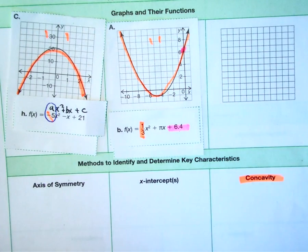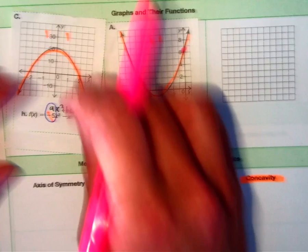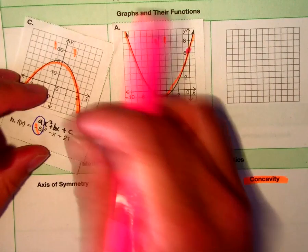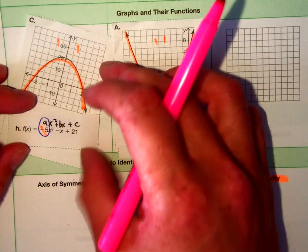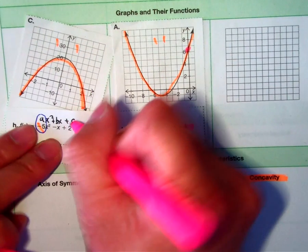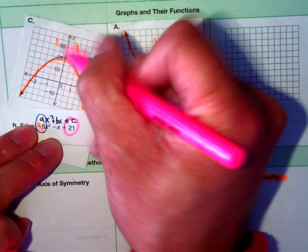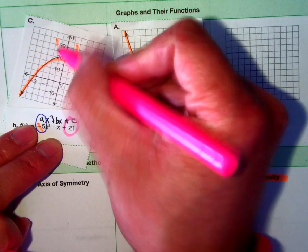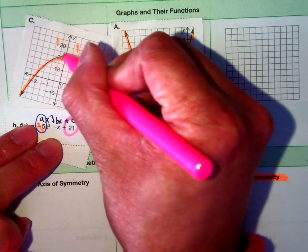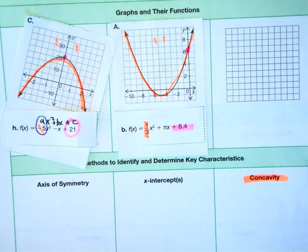And the C value is your Y-intercept, right? Which is right here. So, that is correct.